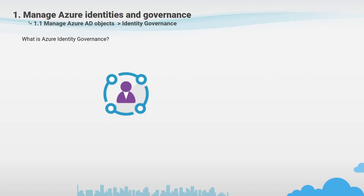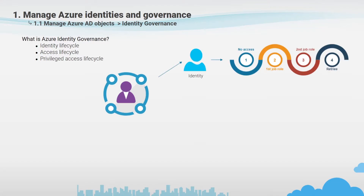Identity Governance gives organizations the ability to perform tasks across employees, business partners, vendors, and across services and applications both on-premise and in the cloud — such as governing the identity lifecycle, governing the access lifecycle, and securing privileged access for administration.